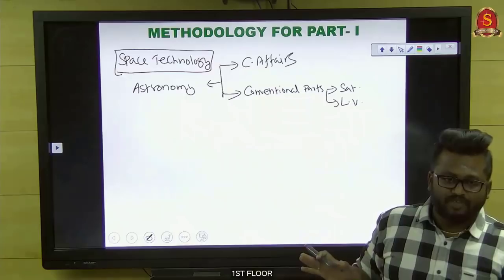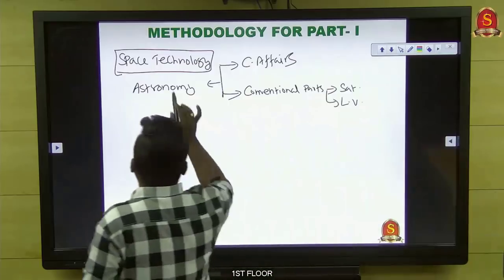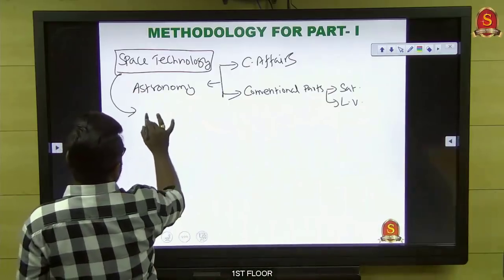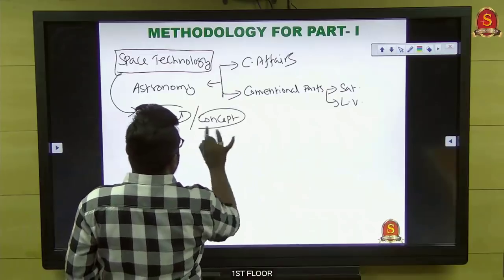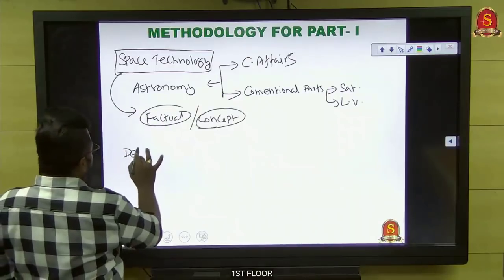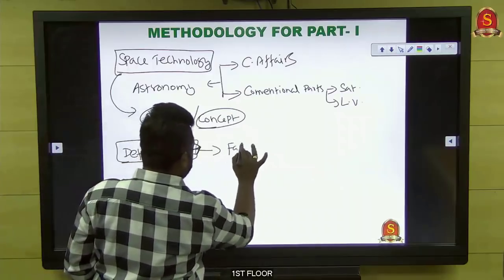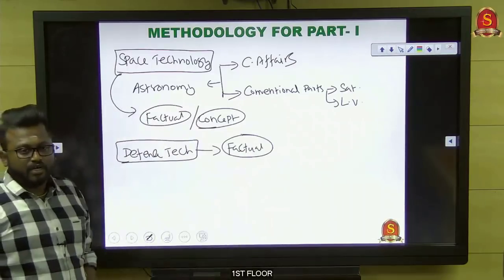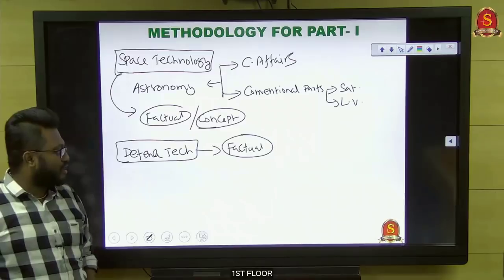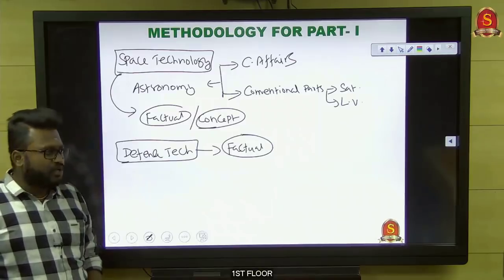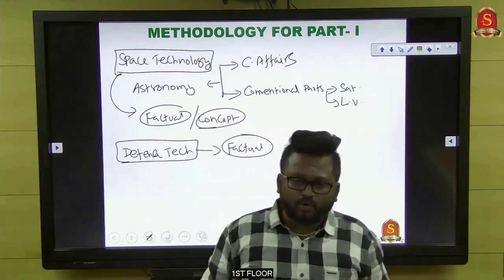For space technology, questions come in the form of facts as well as concepts. For defense technology, questions will mostly be factual. The recent question in 2017 and 2016 regarding INS Astradarani required factual information — what is INS Astradarani. For factual information, go with India Yearbook and DRDO. For official information, use government sources — if anything is disputed, you can have a claim with official statements from websites.